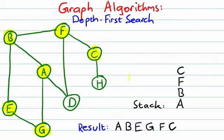Now C is on top of the stack, so we take a look at all the vertices connected to C. C is connected to F, which we've already seen, but H we haven't visited yet. We push H, visit it, and mark it as visited.